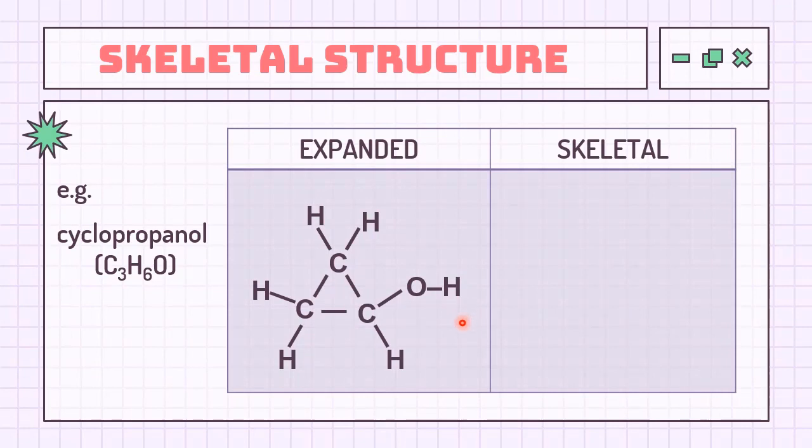The last example involves a ring in between the carbon chain. So a polygon comprised of 3 carbons will be drawn like this. Attached to carbon number 1 is OH. So draw a bond with OH to complete the structure.